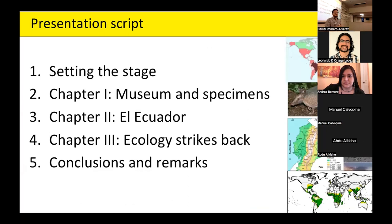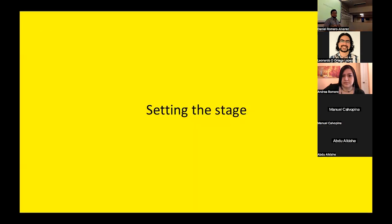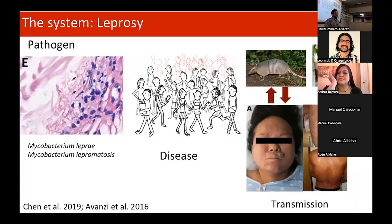In this talk I am going to go through five points. First I will set the stage of what is currently known about leprosy, then I will walk through the three chapters of my research, and then we will finish with some interesting conclusions. To set the stage, I will present the three main protagonists of this story: the disease leprosy, the pathogen causing it, and what we know about transmissibility.